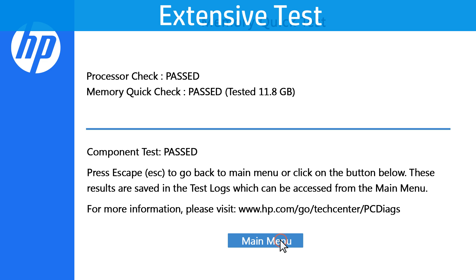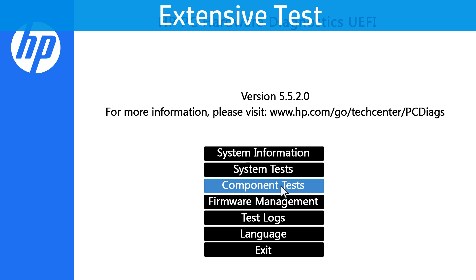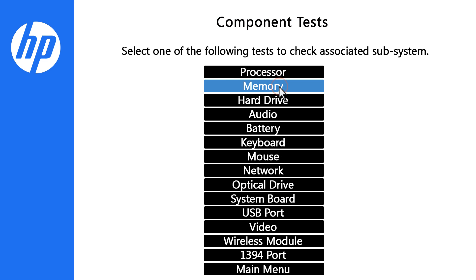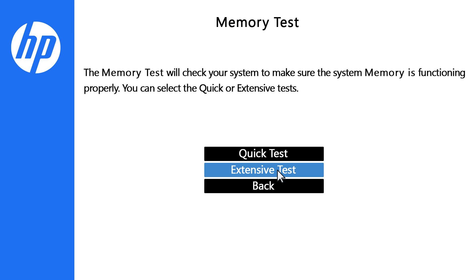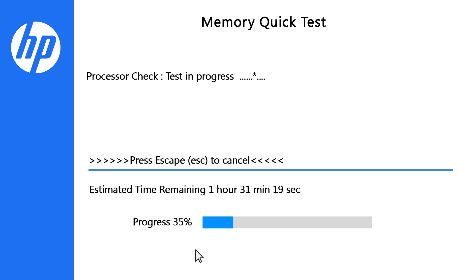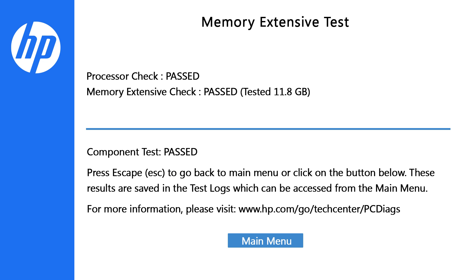Click Main Menu, then click Component Tests. Next, click Memory, then click Extensive Test. Click Run once to start the test. When the test is complete, the results display on the screen.